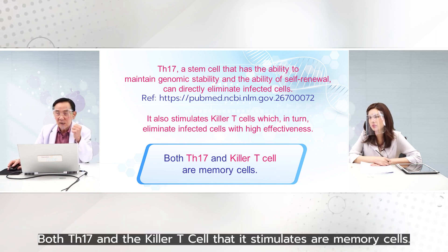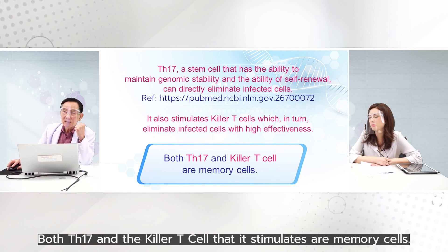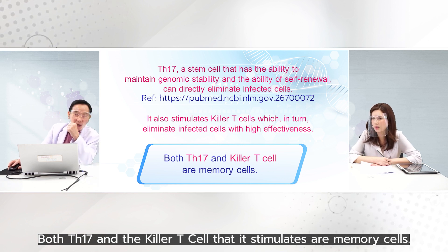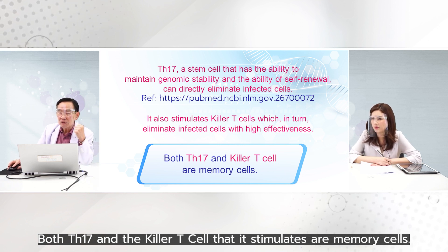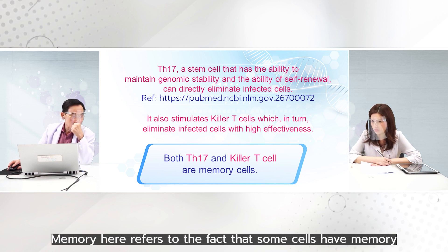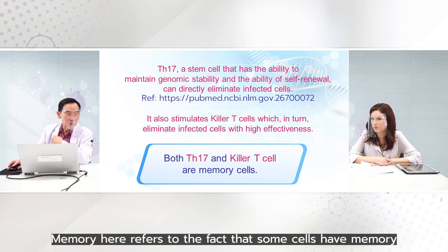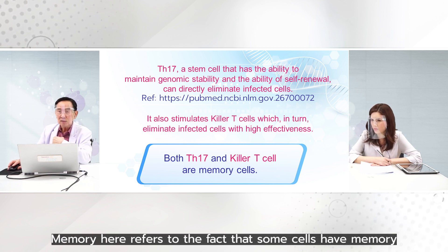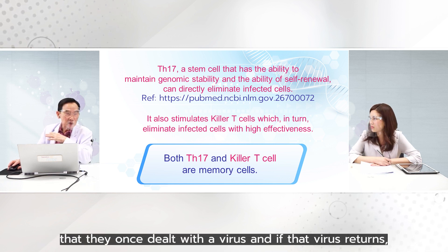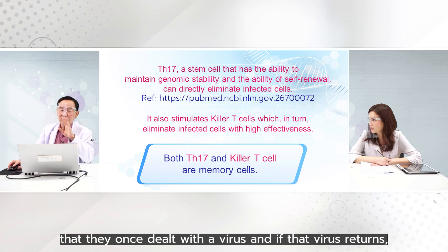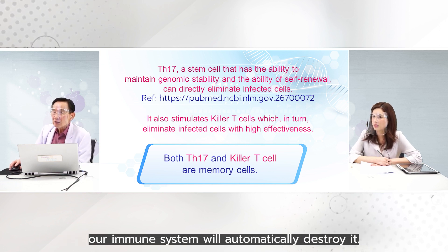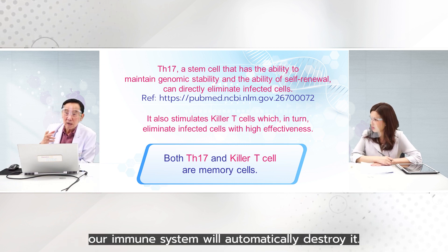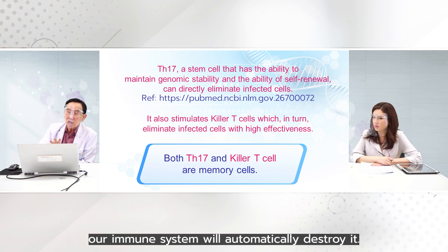Both TH17 and the killer T cells that it stimulates are memory cells. Memory here refers to the fact that some cells have memory of having once dealt with the virus, and if that virus returns, our immune system will automatically destroy it.